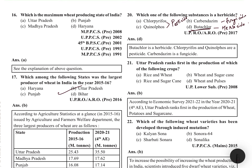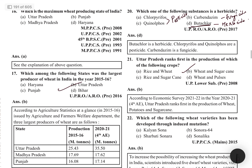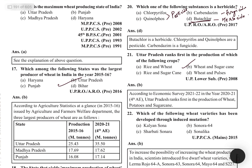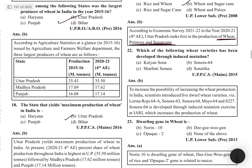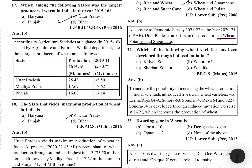Uttar Pradesh ranks first in production of wheat, sugarcane, and potato as of 2021. According to the 2021 economic survey, UP is first in wheat, potato, and sugarcane. The wheat variety developed through induced mutation is Sonora 64. Scientists introduced 5 dwarf varieties including Lerma Rojo 64A, Sonora 63, Sonora 64, Mayo 64, and S227. Sonora 64 was developed through induced mutation at IARI (Indian Agricultural Research Institute).